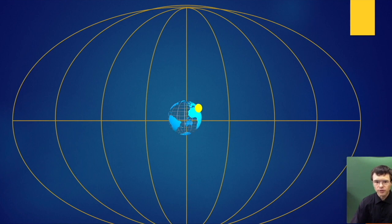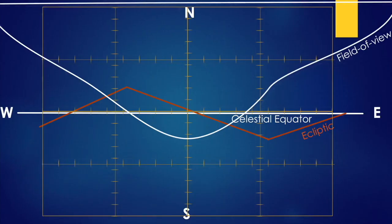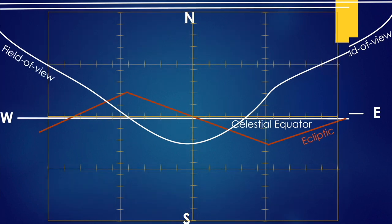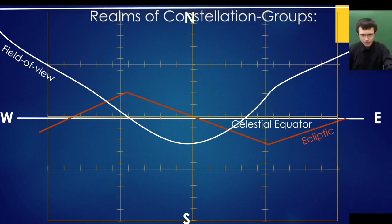You probably want to watch my other video to see how the heavens turn and how they appear from your perspective standing on the earth. So if you find yourself wondering what the red ecliptic line is, or why the night sky doesn't seem to appear the way it appears in this video, then you probably want to watch that video. There is a link to it in the video description. So, the Christian constellations.